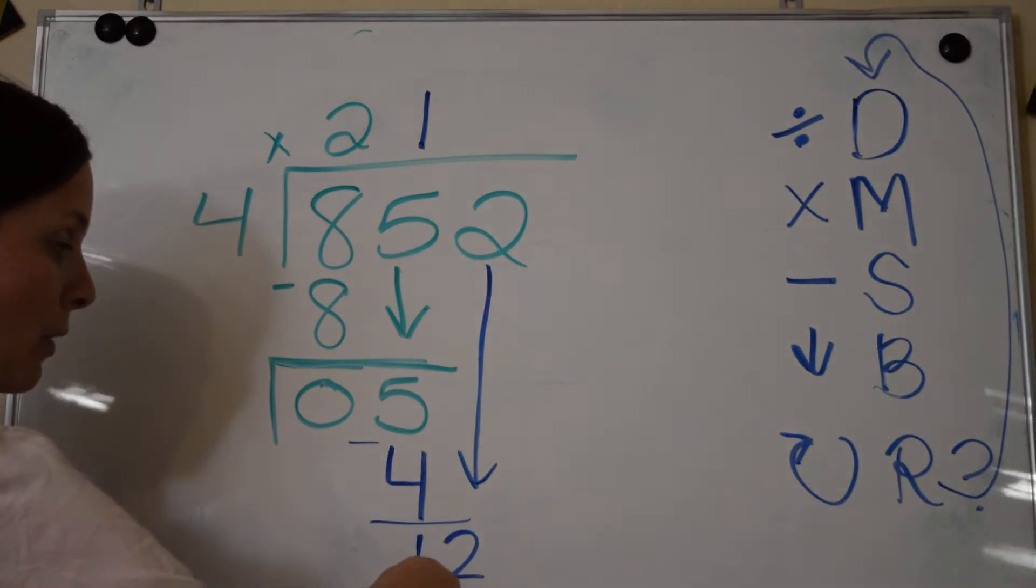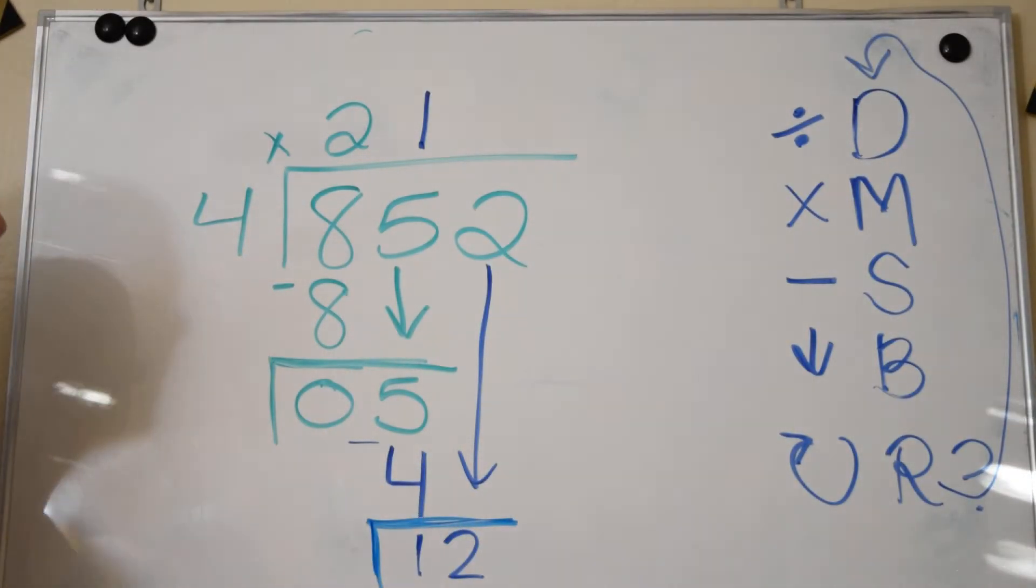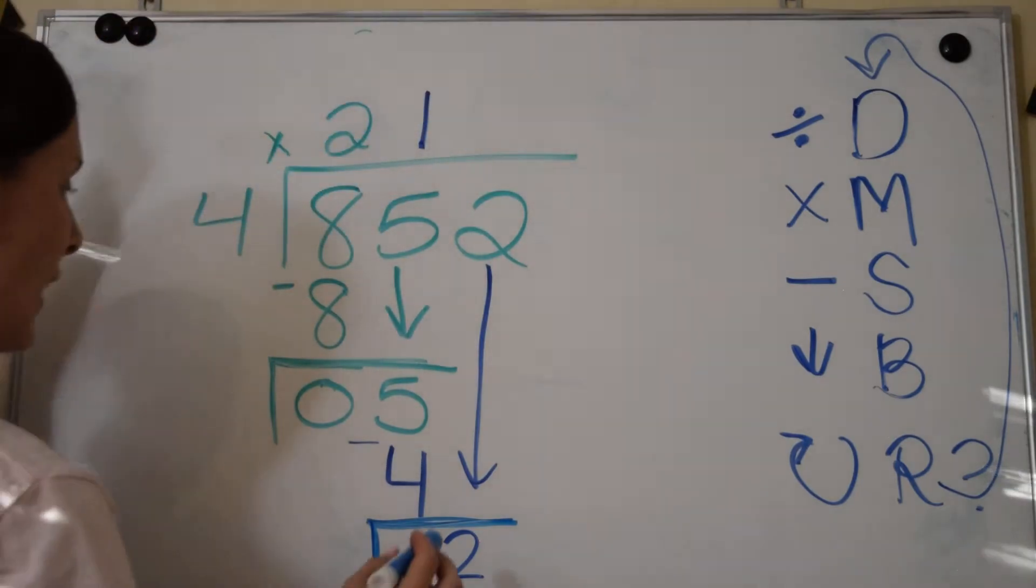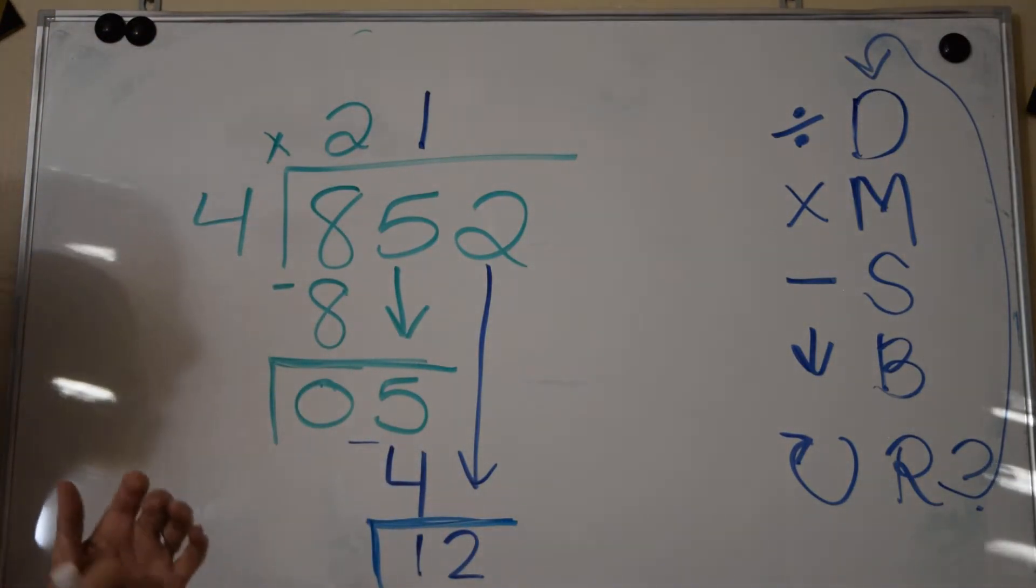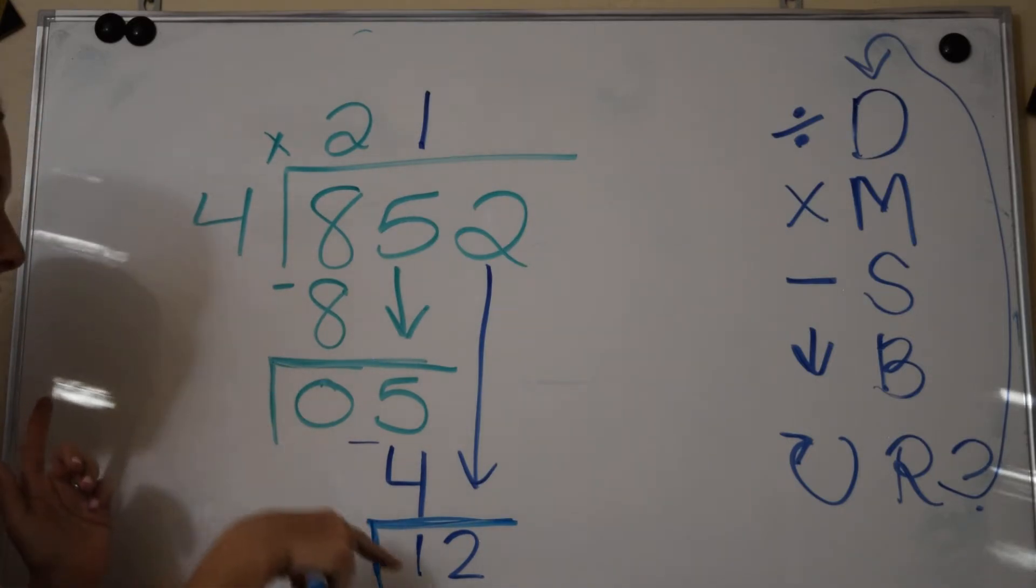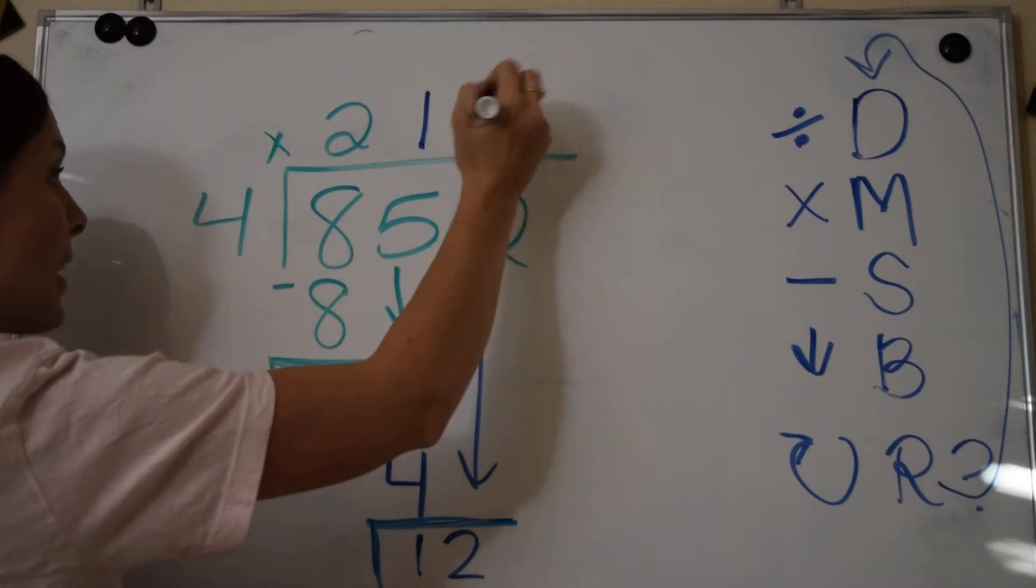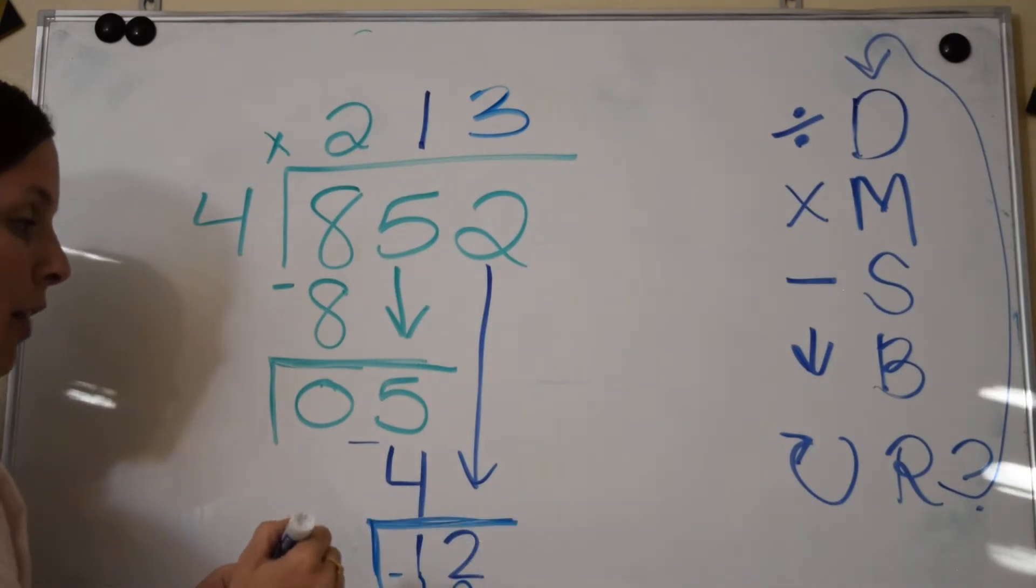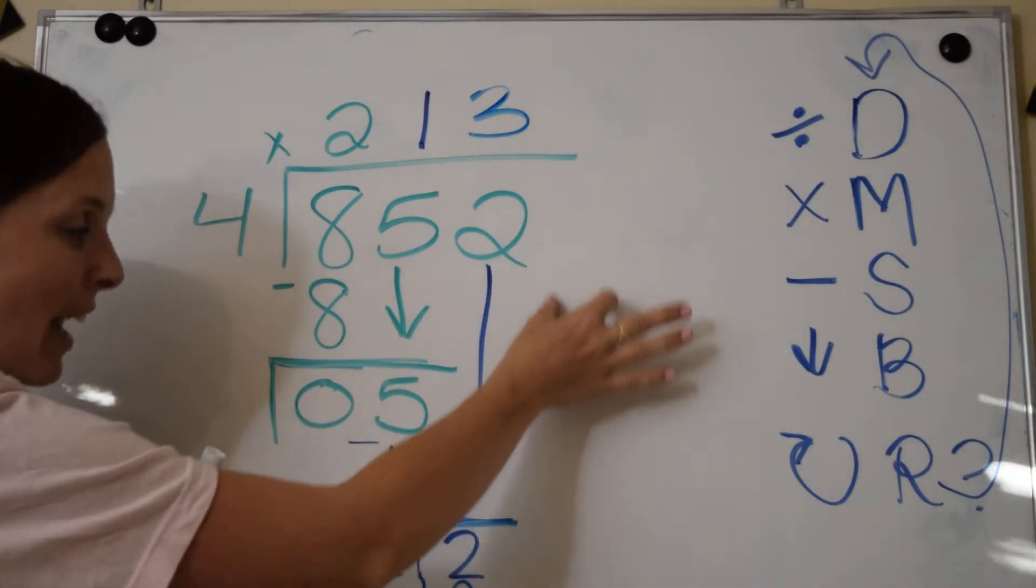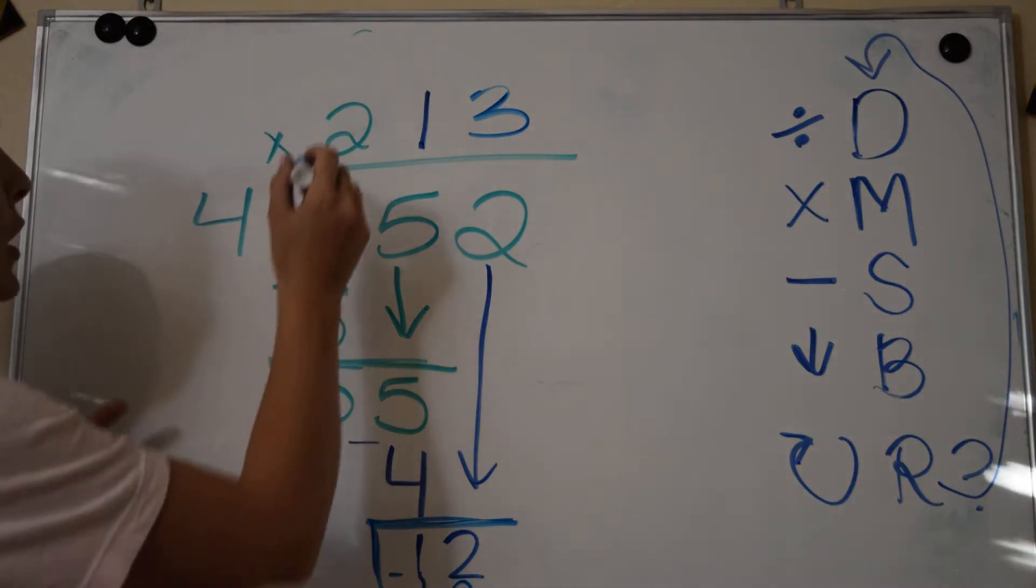Now we're working with the 12. Repeat, go back and divide. We're dividing 12 divided by 4. That happens to be a fact family: 4 can fit into 12 three times perfectly. 3 times 4 is 12. Then we subtract: 12 minus 12 is 0. Then we bring down—I don't have anything to bring down and my remainder was 0.